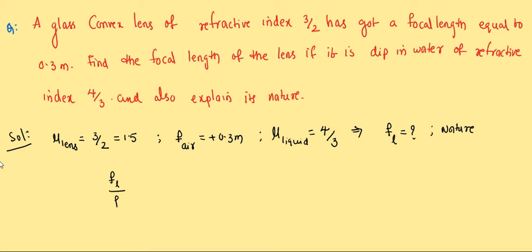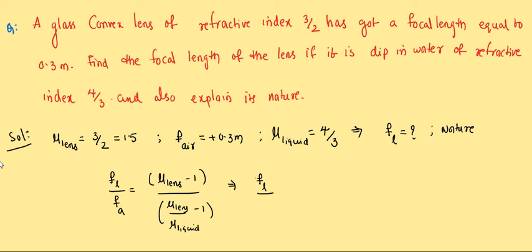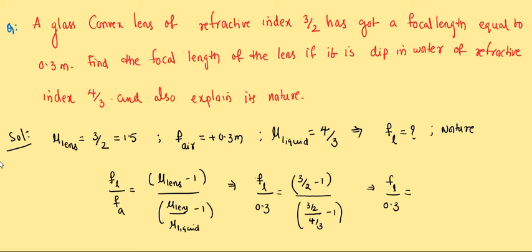Using the formula FL/FA = (n_lens - 1) / (n_lens/n_liquid - 1): substituting, numerator = (3/2 - 1) = 1/2. Denominator = (3/2 ÷ 4/3) - 1 = (9/8) - 1 = 1/8. So FL/0.3 = (1/2) / (1/8) = 4. Therefore FL = 0.3 × 4 = 1.2 meters.